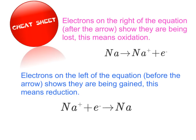If you're finding it difficult to think about oxidation and reduction in terms of electrons, we can think of it in terms of where electrons appear in the equation. Electrons on the right of the equation, after the arrow, show that they are being lost, which means oxidation is happening. Electrons on the left of the equation, before the arrow, show they are being gained, which means reduction is happening.